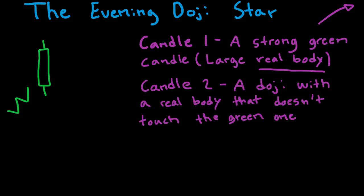So it might look something like this. It actually pretty much looks like a plus sign, but the real body of the doji is this horizontal line right there, and that real body cannot touch the real body of the prior green one, and it doesn't do.